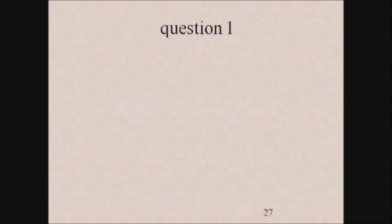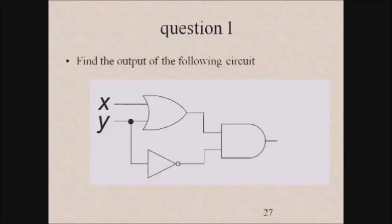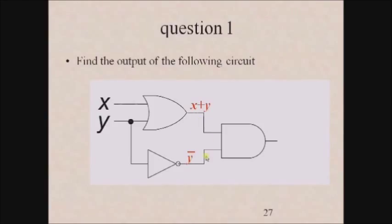Let us solve some examples. Find the output of the following circuit where x and y are two input variables. The OR gate takes x and y as inputs, producing output x plus y. The NOT gate takes y as input, producing y bar. These outputs are given as inputs to an AND gate. Therefore, the output of the AND gate is (x plus y)·y bar.